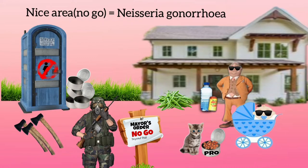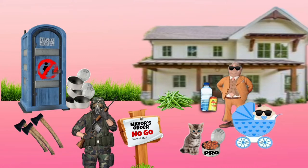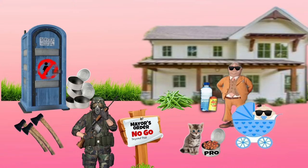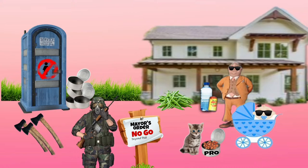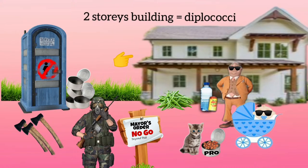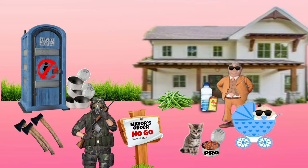From the name itself, you know this is the bacteria that causes gonorrhea. The mayor's house is in a beautiful place with pink skies and red soil — remember that gonococci is a Gram-negative bacteria. Also, the mayor's house is a two-story mansion, so remember that gonococci is a diplococci.